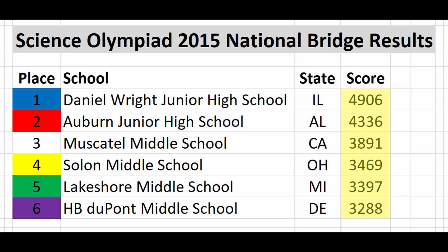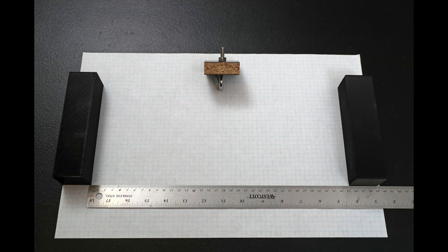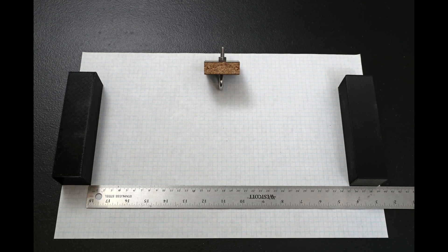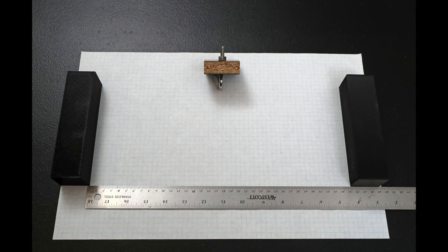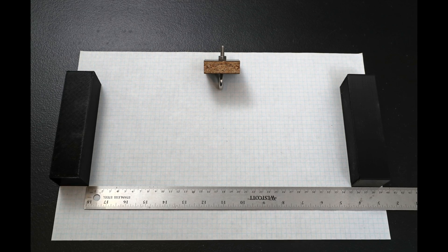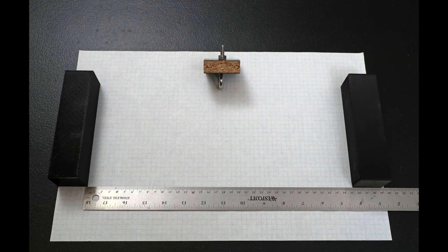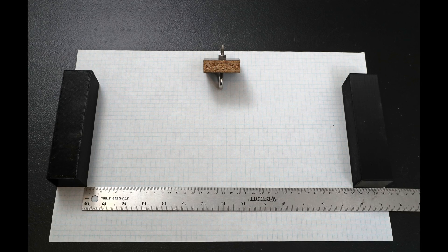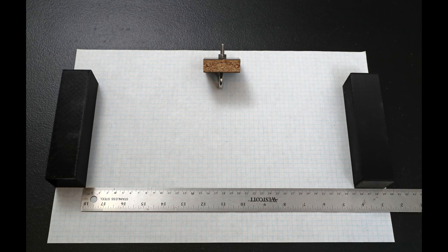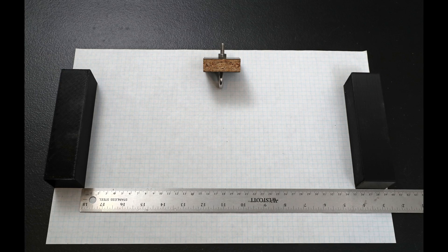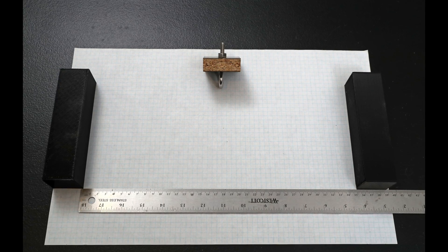So what do these scores mean in the real world? I want to simplify this event for those who have never seen it before and give a better intuitive understanding of what those efficiency numbers mean. This picture boils the event down to the basics. We must build a bridge out of wood that spans 35 centimeters — or 45 centimeters for Division C — as shown here between the two blocks. It has to support the loading block in the center of the span.